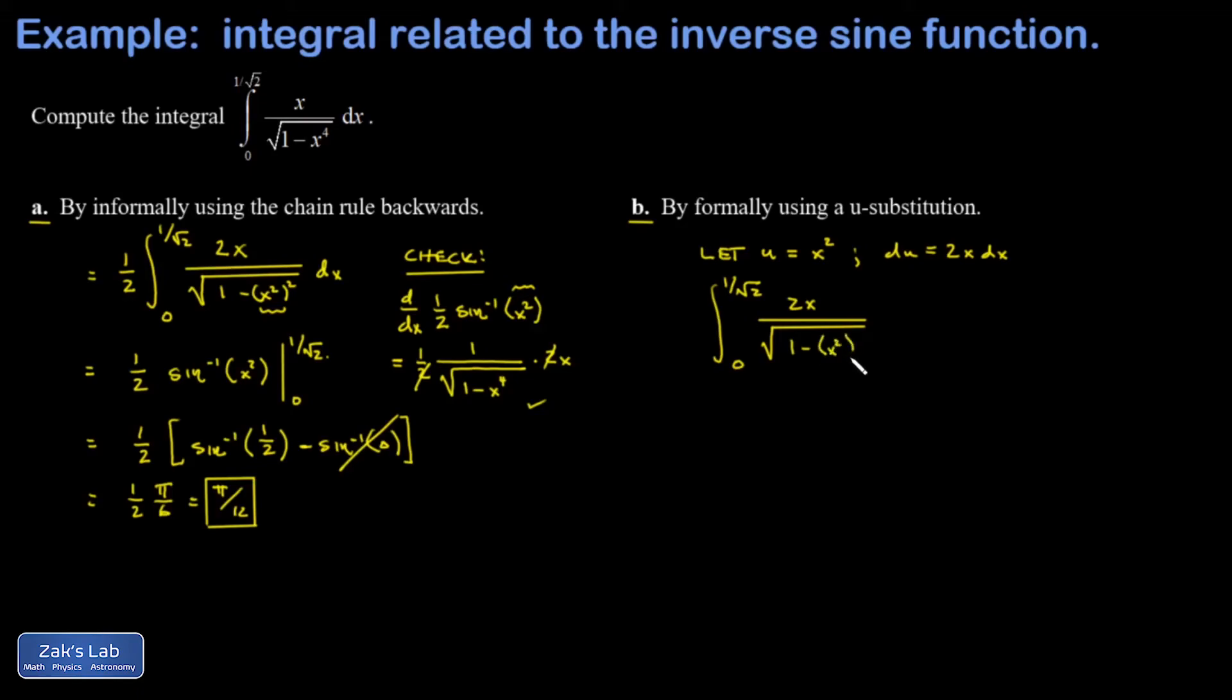And again, I've recognized this is like an inverse sine type of thing. So I'm going to express x to the 4th as x squared squared. Put a 1 half in front to compensate for the 2 that I put in there. And now this piece I recognize as du. And this piece is a 1 minus u squared inside that square root.